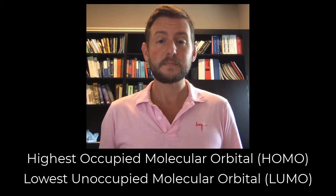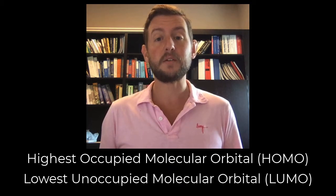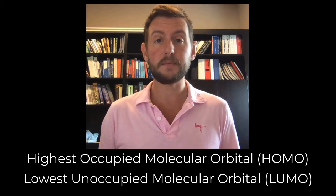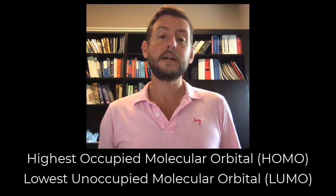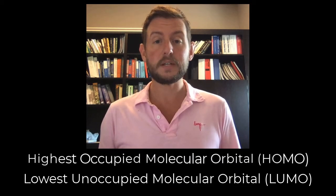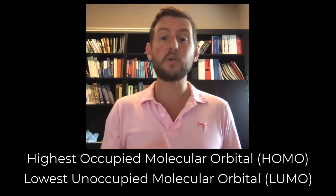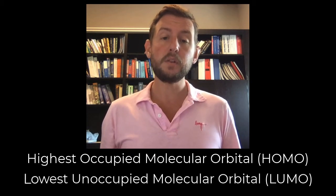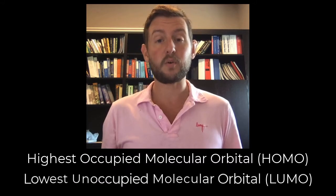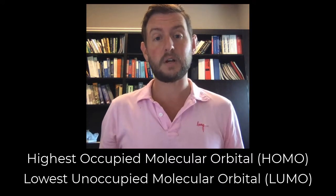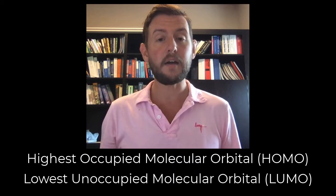In most cases, these are the orbitals that will either donate or accept electrons in a chemical reaction. As its name implies, the highest occupied molecular orbital is the highest energy orbital, or orbitals, that has electrons in it. The lowest unoccupied molecular orbital is the lowest energy orbital without electrons in it. Every molecule has a HOMO and a LUMO.